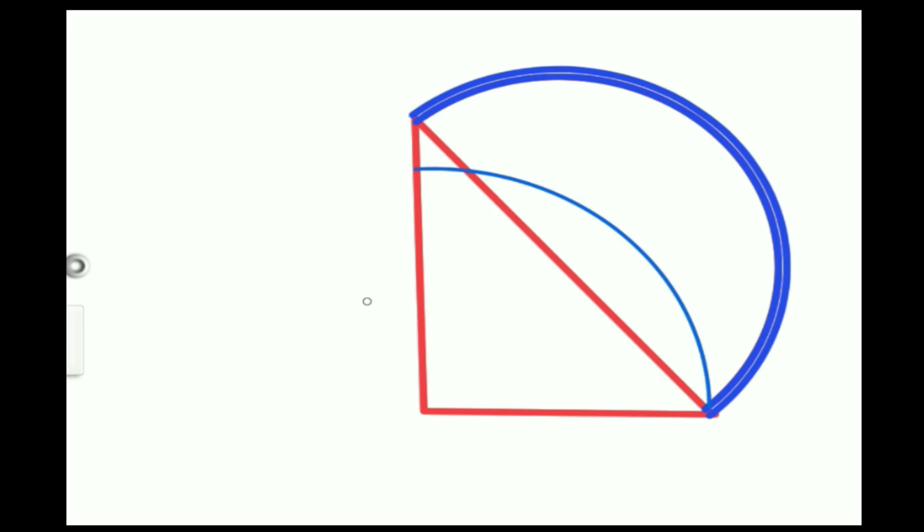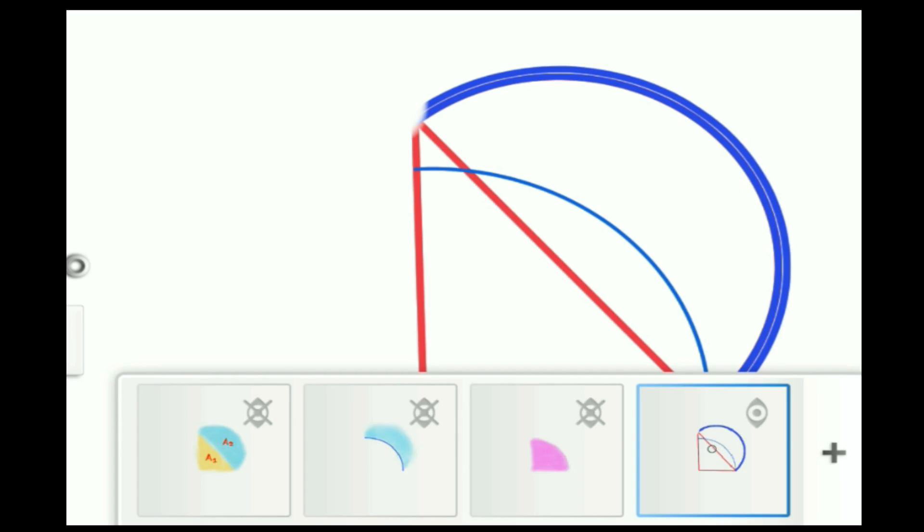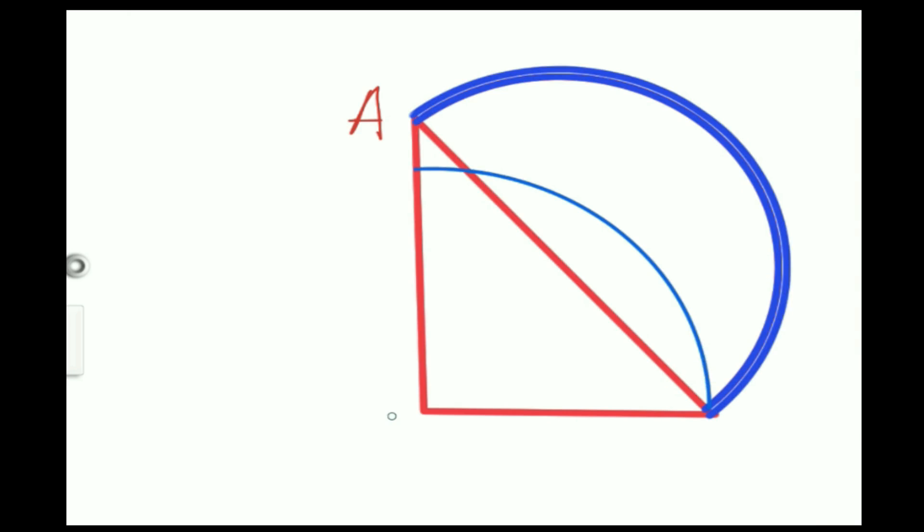First of all, I am explaining the sum here. ABC is the triangle given here. ABC is a triangle in which it is given AB is 28 cm and BC is 21 cm.